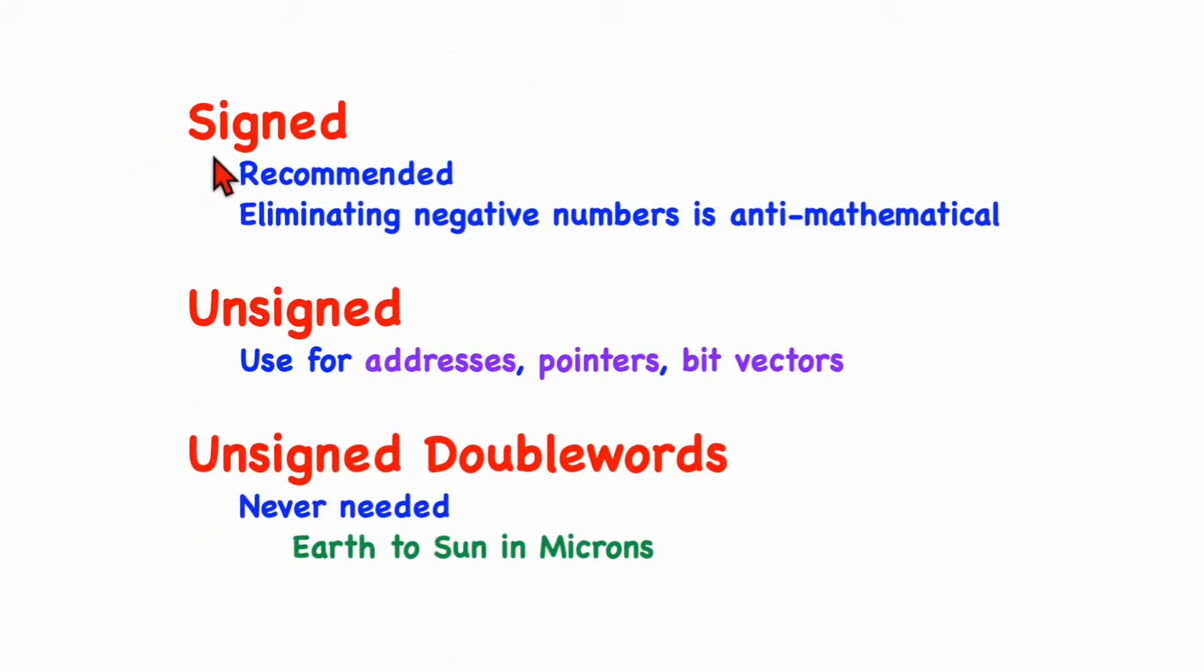Generally speaking, you should use signed representation whenever possible. Eliminating negative numbers is anti-mathematical. But sometimes you're trying to squeeze an integer value into a particularly small space, such as a byte or half word, and it may make good sense to eliminate your negative numbers so that you can get a slightly larger positive number. We also see unsigned numbers being used for addresses and pointers, and also bit vectors, which are not really representations of integers at all.